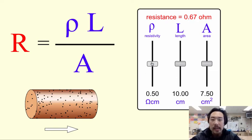Resistivity is the rho and that shows us the likelihood that the material is going to prevent a current from flowing through.